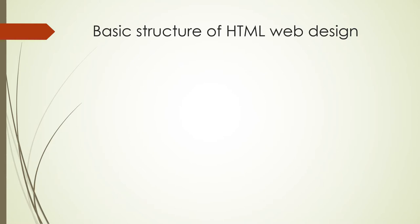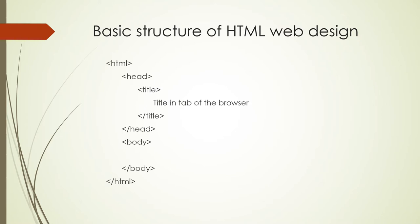Let's start off by remembering the basic structure of our web design. The first thing we do is open up our HTML tag and at the end close the HTML tag. We then have our head section and our body section. In the head section, we add a title by opening and closing the title tag — what you put in the middle will appear in the tab of the browser. In the body section, anything typed there will be the content of your web page.